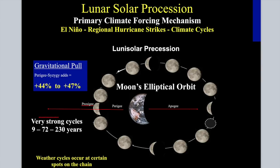You can have coastal flooding on a new moon or full moon without a storm on the east coast of the United States if you have a very strong cycle — just as much coastal flooding as you would from a winter storm. That's how powerful it can be.